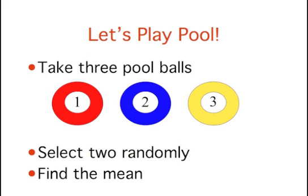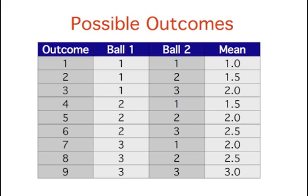To illustrate the concept of a sampling distribution, we'll use a simple example. Select two of these three pool balls randomly and find the average of their numbers. When you consider all possible outcomes from this scenario, you will find that all the means are either 1.0, 1.5, 2.0, 2.5, or 3.0. Notice that some means occur more frequently than others. For example, there are three ways to get a mean of 2, but only one way to get a mean of 3.